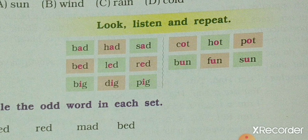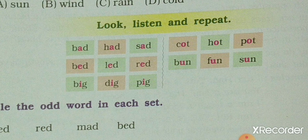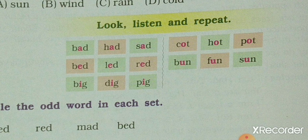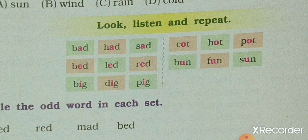After I read, you also read and repeat to learn. Bad, head, set. Bad, lead, red. Big, big, pig. Now: coat, hot, coat. Bun, fun, sun.